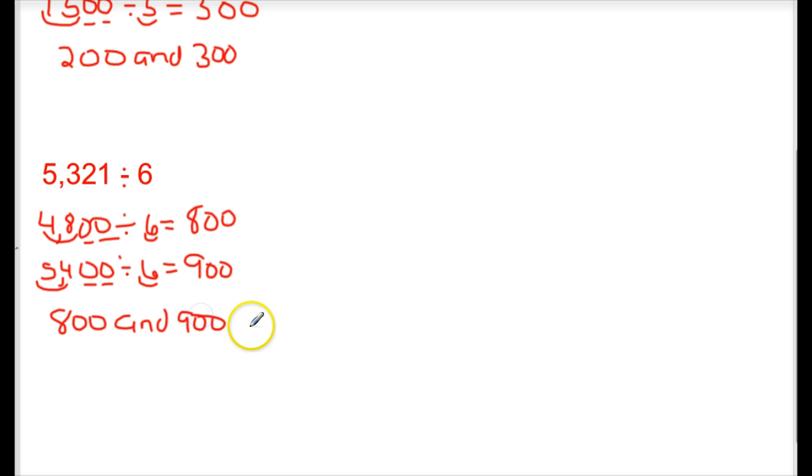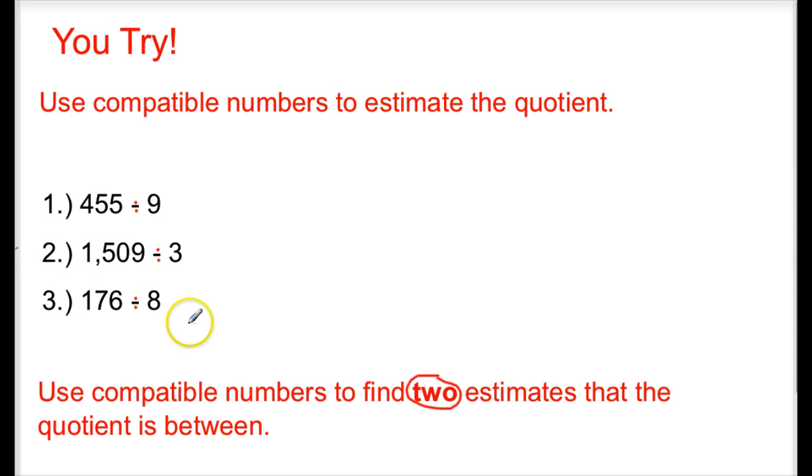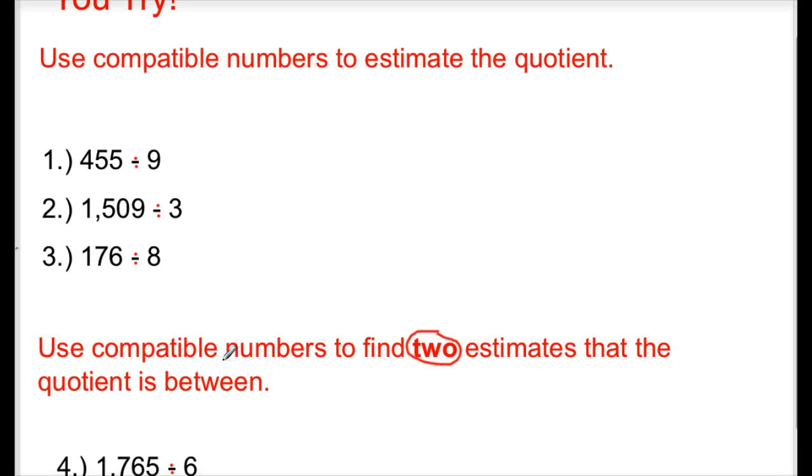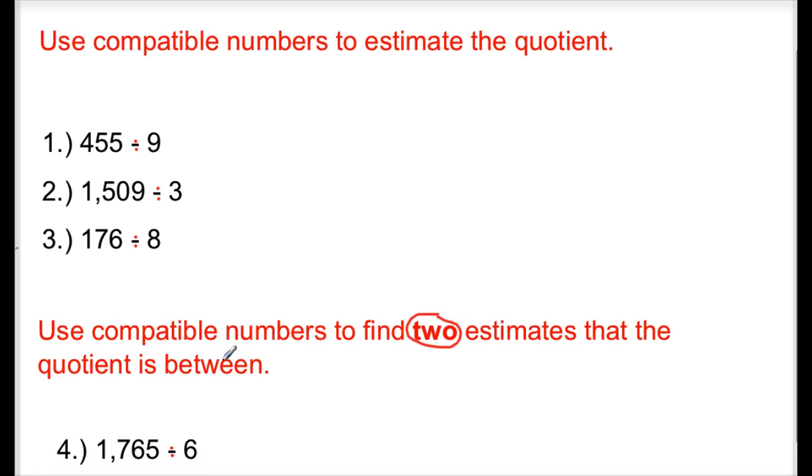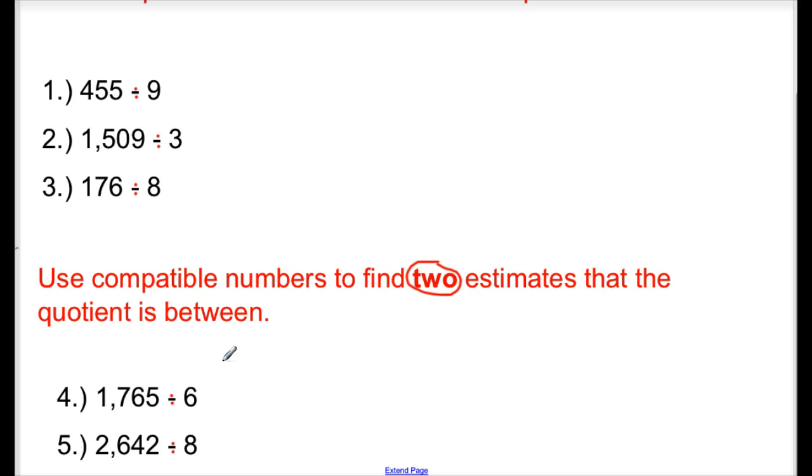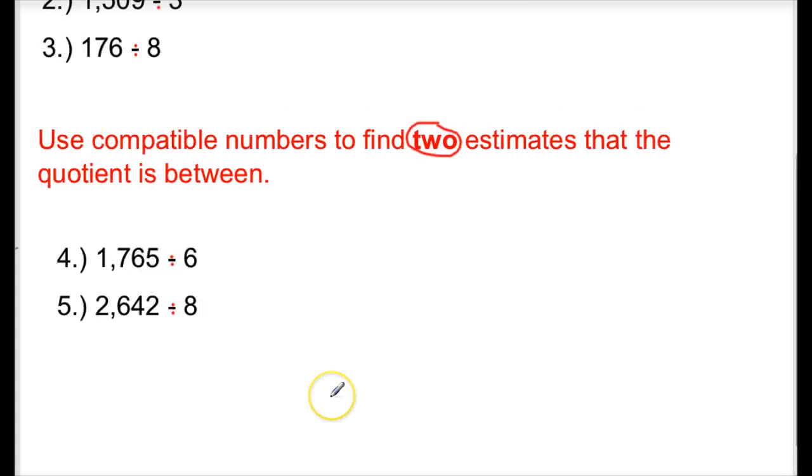Now, I have some more of these that I would like for you to practice. You also have a practice worksheet with you for even more additional practice that we started on in class today. So for tonight, in your journals, I want you to try these problems here, using compatible numbers to estimate the quotient, and then using compatible numbers to find the two estimates that the quotient is between. So these are the five problems that I would like for you to work on.